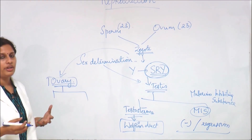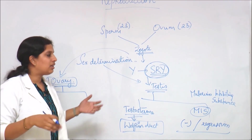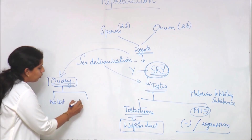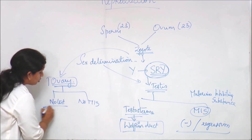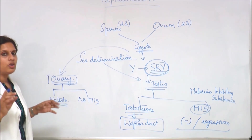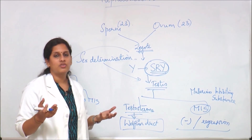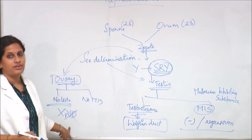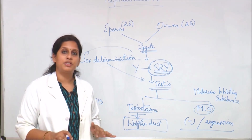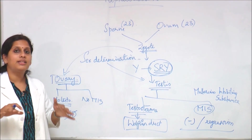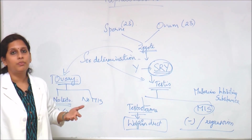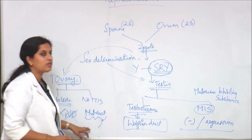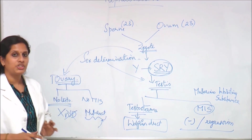In the ovary, there is no testosterone and no Mullerian inhibiting substance produced. With no testosterone, there will be no development of Wolffian duct structures — the Wolffian duct undergoes regression. And with no Mullerian inhibiting substance present, there is nothing to suppress the Mullerian duct, so Mullerian duct proliferation occurs, developing into the female reproductive structures.